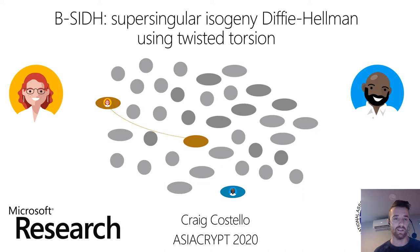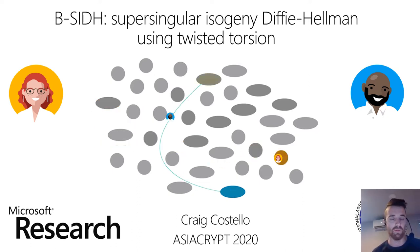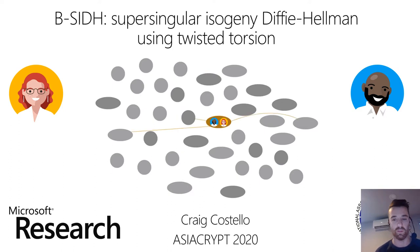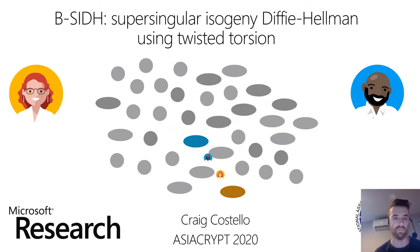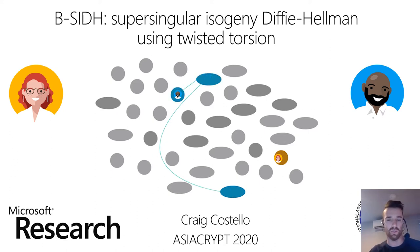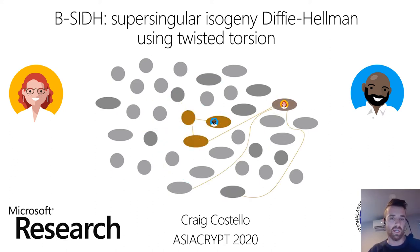I think that down the track, if some problems can be solved — in particular if computing large prime-degree isogenies can be accelerated — I actually think that B-side might end up being the way to go as far as isogeny-based key exchange goes. It might be as performant, maybe even more performant than SIDH and CSIDH.